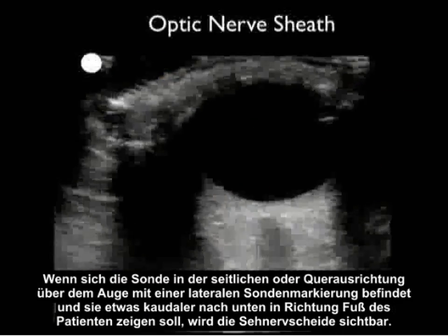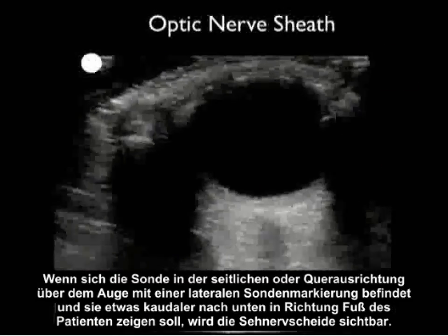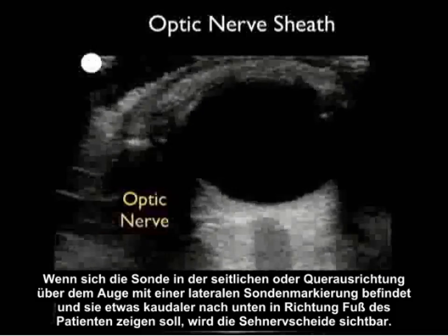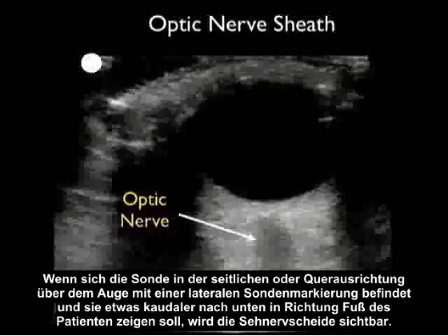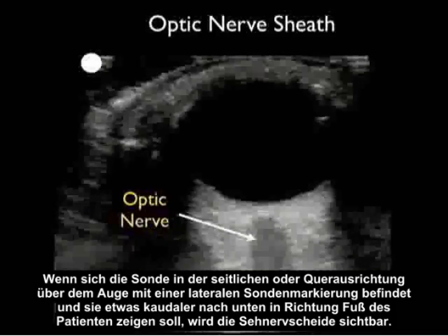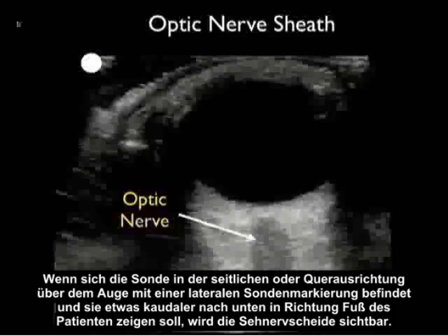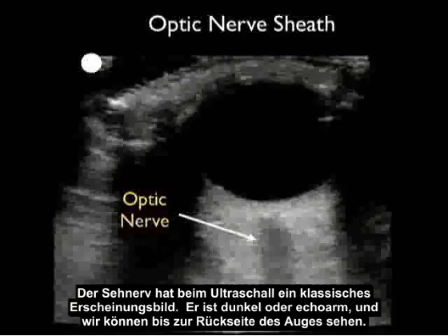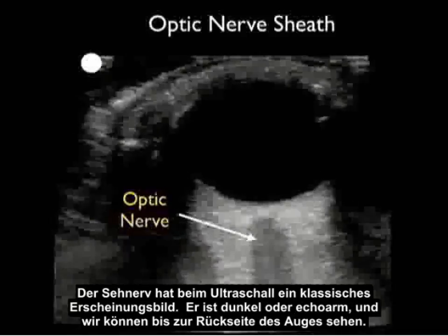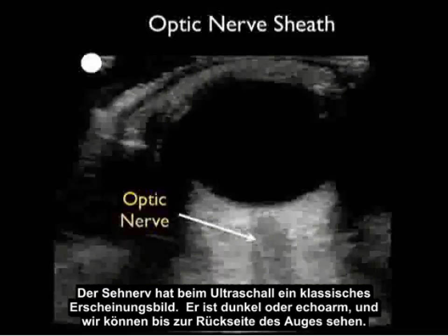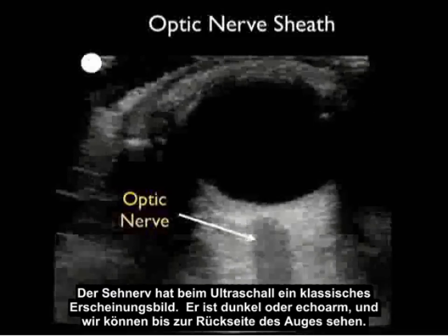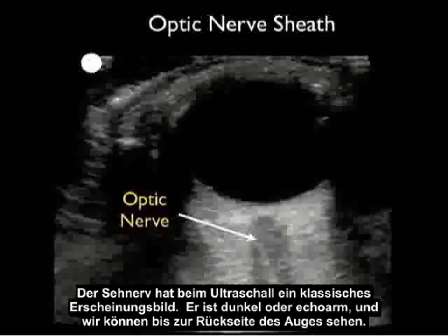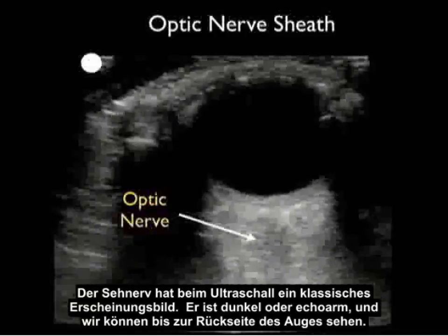If we have the probe in a side-to-side or transverse orientation with the probe marker lateral and aim it slightly more inferiorly toward the patient's foot, the optic nerve sheath will come into view. The optic nerve has a classic appearance on bedside ultrasound — it appears dark or hypoechoic, and we can see it leading right up to the back of the eye.